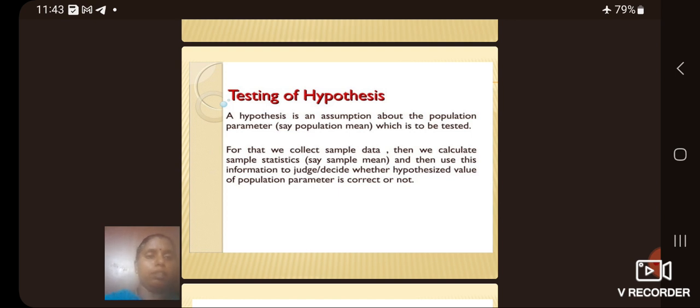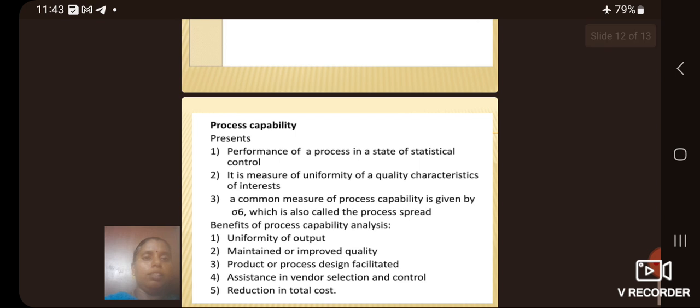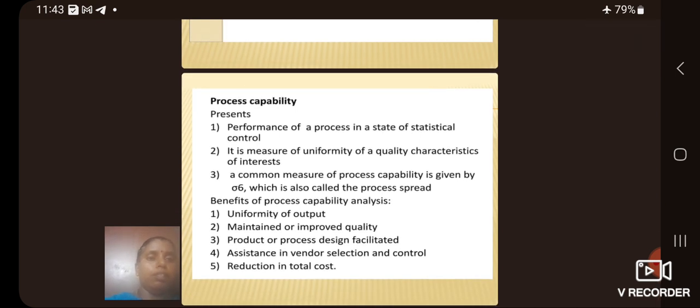Then we see the process capability. Process capability is performance of a process in a state of statistical control. It is a measure of uniformity of a quality characteristics of interest. A common measure of process capability is given by 6 sigma which is also called the process spread.